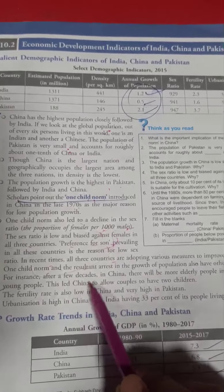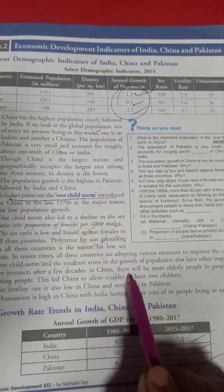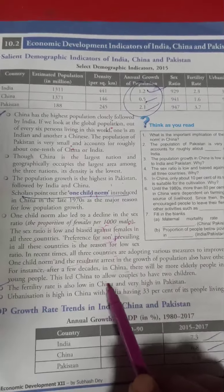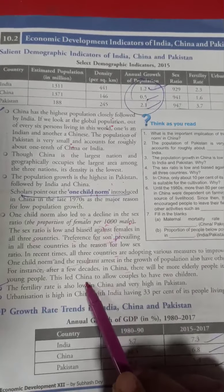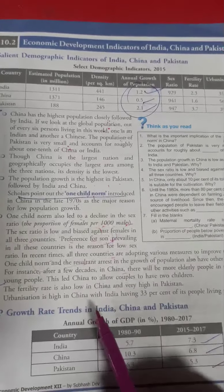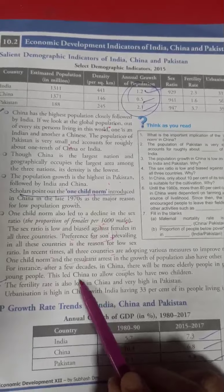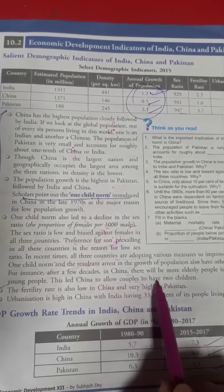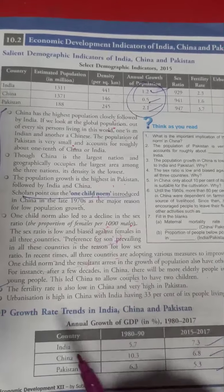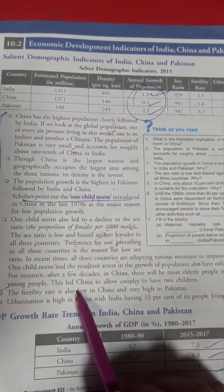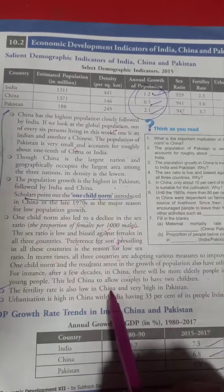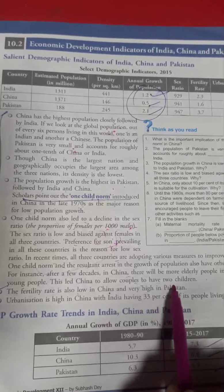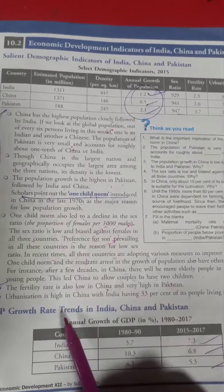After a few decades of the one-child policy, the elderly population in China has become higher compared to young people. China then allowed couples to have two children. The fertility rate of China is the lowest, and Pakistan has the highest fertility rate.